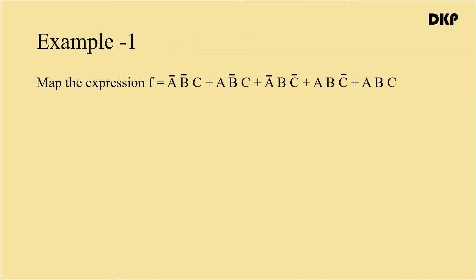Now let us do an example. We have to map the expression F equals A bar B bar C plus A B bar C plus A bar B C bar plus A B C bar plus A B C in a three variable K-map, because there are three variables A, B, C. The first step is that the given SOP expression must be converted to min terms.